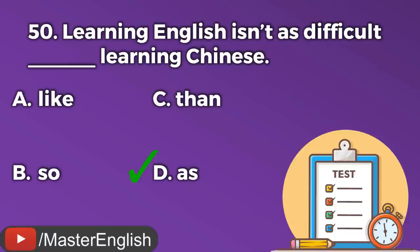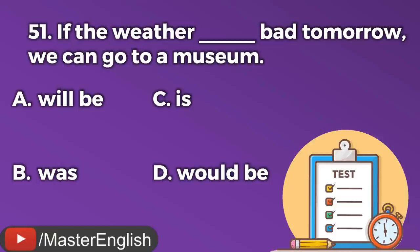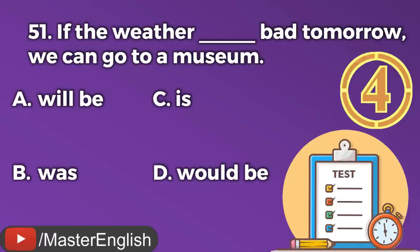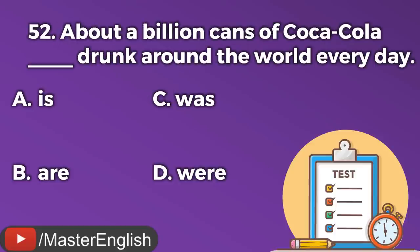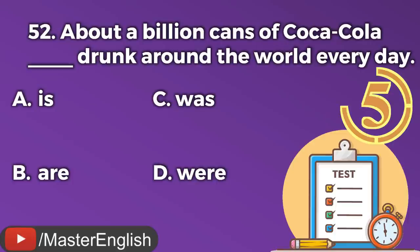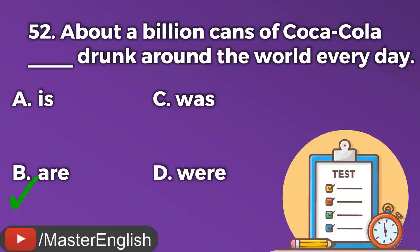Question number fifty-one. If the weather ___ bad tomorrow, we can go to a museum. A: Will be. B: Was. C: Is. D: Would be. The correct answer is C: Is. If the weather is bad tomorrow, we can go to a museum. Question number fifty-two. About a billion cans of Coca-Cola ___ drunk around the world every day. A: Is. B: Are. C: Was. D: Were. The correct answer is B: Are. About a billion cans of Coca-Cola are drunk around the world every day.